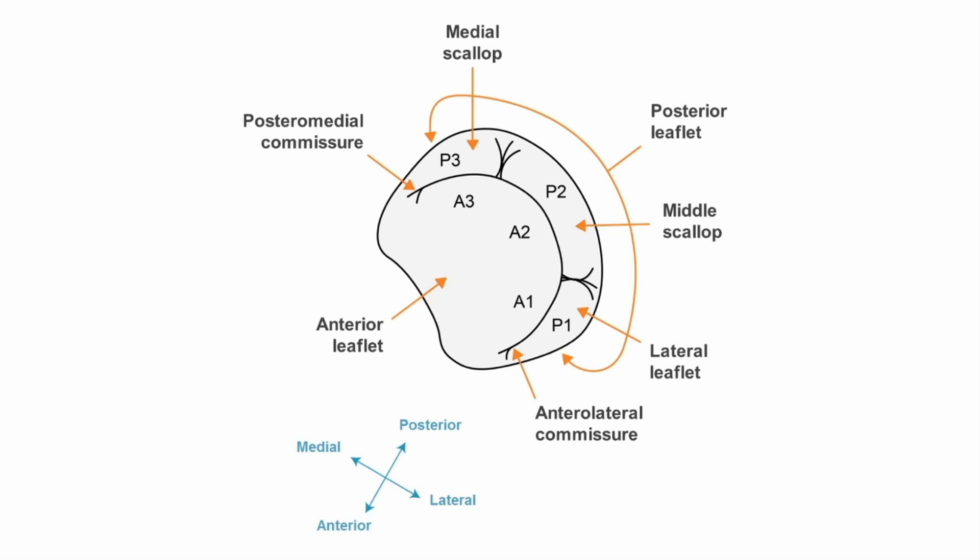For the anterior leaflet these are labelled A1, A2 and A3, and for the posterior leaflet they're labelled P1, P2 and P3.